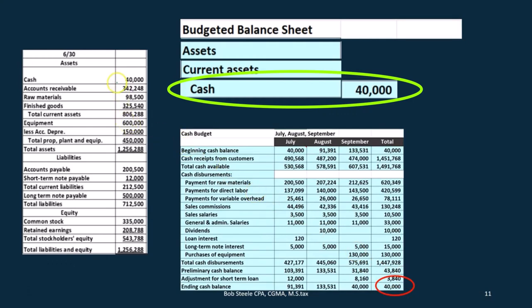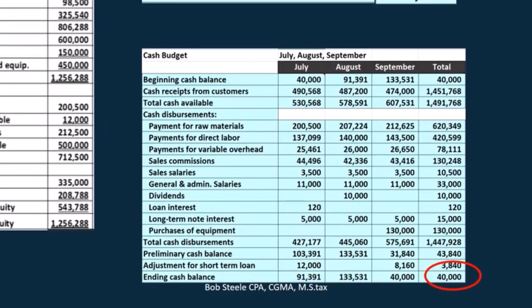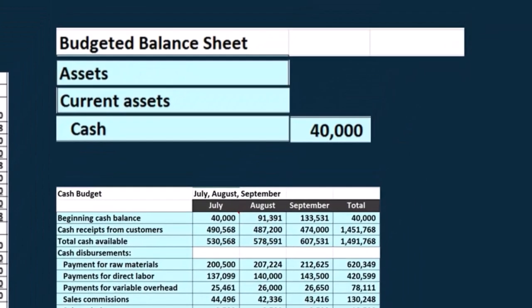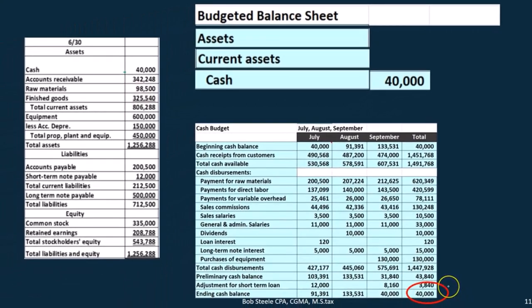Don't confuse that with the $40,000 at the beginning of last time's balance sheet. This is the balance sheet at the end of last period, which is of course the beginning numbers for this period. The reason it's the same is because that's our minimum balance — we needed to take out a loan to get to $40,000 because that's our minimum balance. This is the beginning $40,000 and this is the ending $40,000. They're the same because we made it the same in order to keep our minimum balance at $40,000 by taking out a loan — in this case the loan at the end for $8,160.